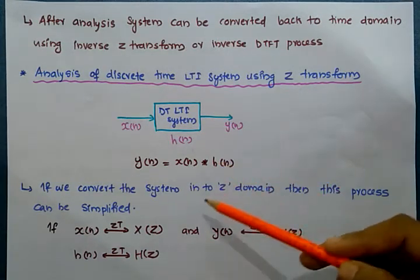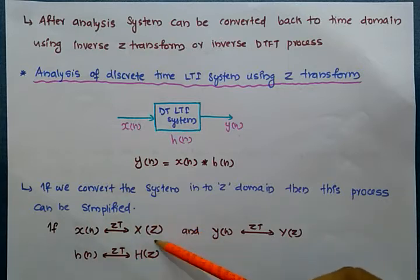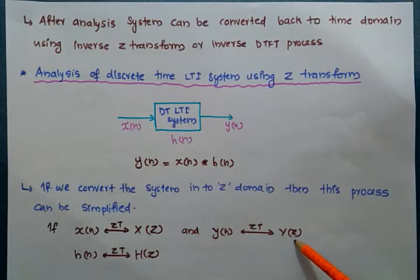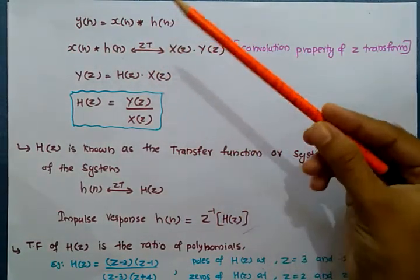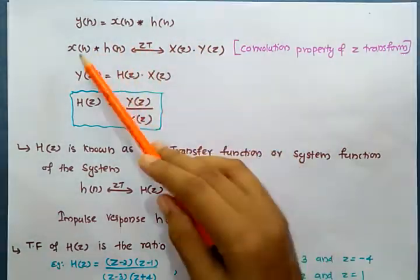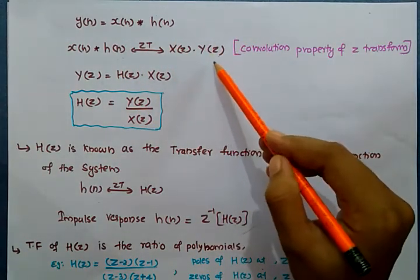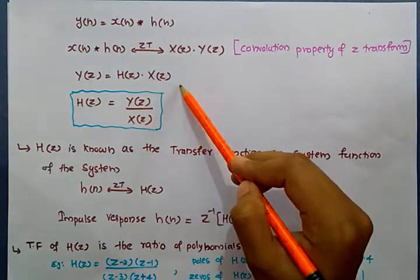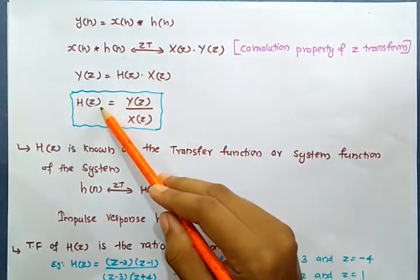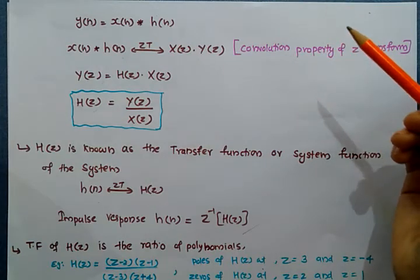So we convert this system into the Z-domain, which simplifies the process. We know that the Z-transform of x is X(z), Z-transform of h is H(z), and Z-transform of y is Y(z). Using the convolution property of Z-transform — which we already studied in module 5 — we can write Y(z) equal to X(z) times H(z). From this, we can find H(z), which equals Y(z) divided by X(z). This H(z) is known as the transfer function or system function of the system.